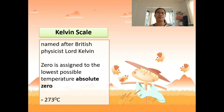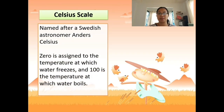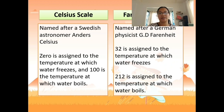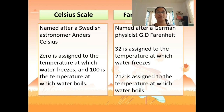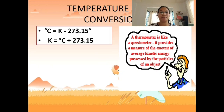The Kelvin scale is named after British physicist Lord Kelvin, where zero is assigned as absolute zero — the lowest possible temperature — equivalent to negative 273°C. The Celsius scale is named after Swedish astronomer Anders Celsius, where 0°C is the freezing point and 100°C is the boiling point. The Fahrenheit scale is named after German physicist Fahrenheit, where 32°F is the freezing point and 212°F is the boiling point.